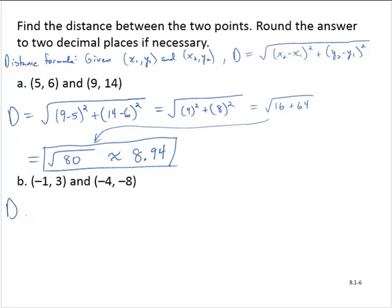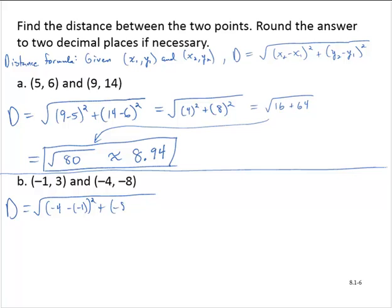In part B, we're given the ordered pairs (-1, 3) and (-4, -8). So then by the distance formula, the distance would be given by the square root of (-4 minus -1)² plus (-8 minus 3)².